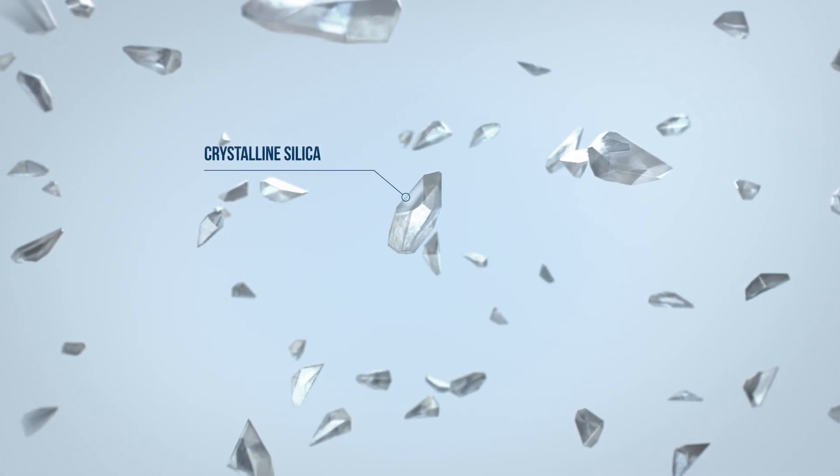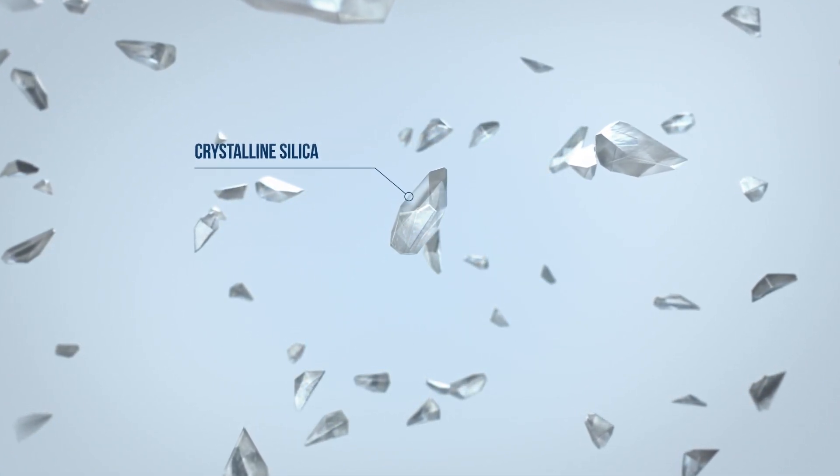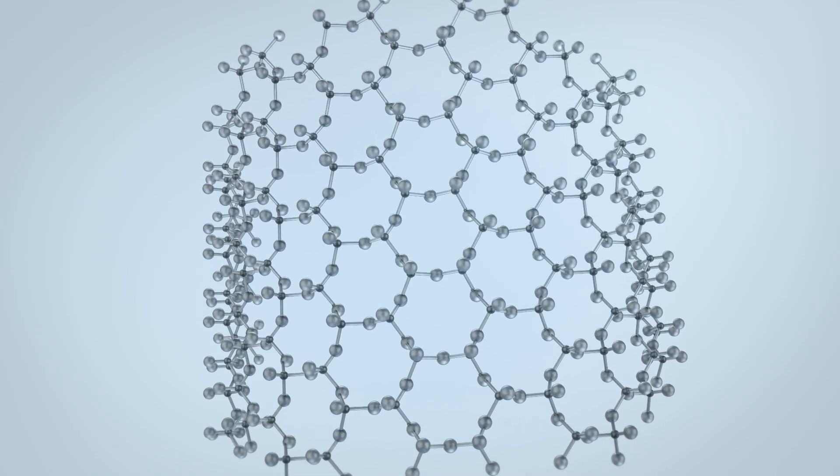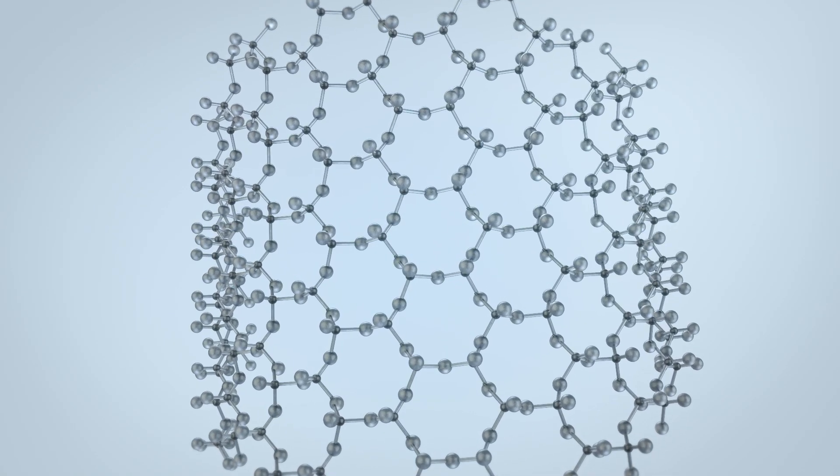Here's how it works. We start with naturally occurring crystalline silica. Crystalline silica is used because it can oscillate at specific frequencies.